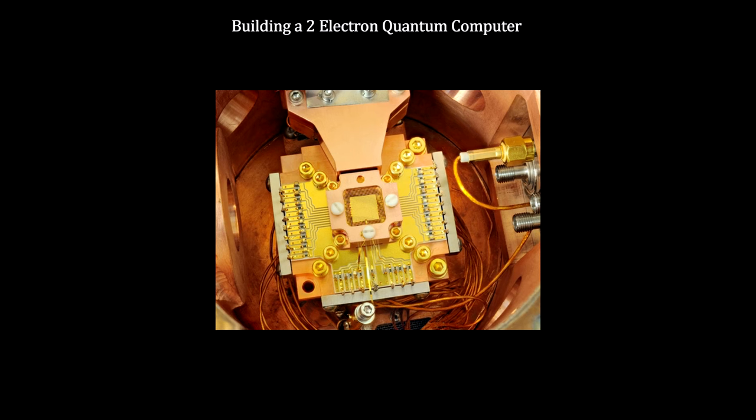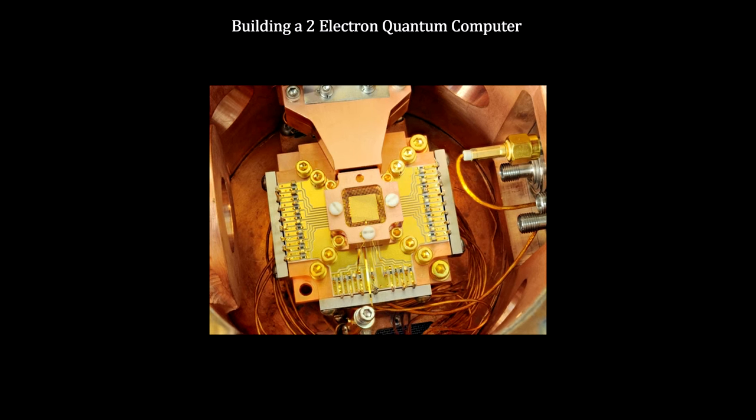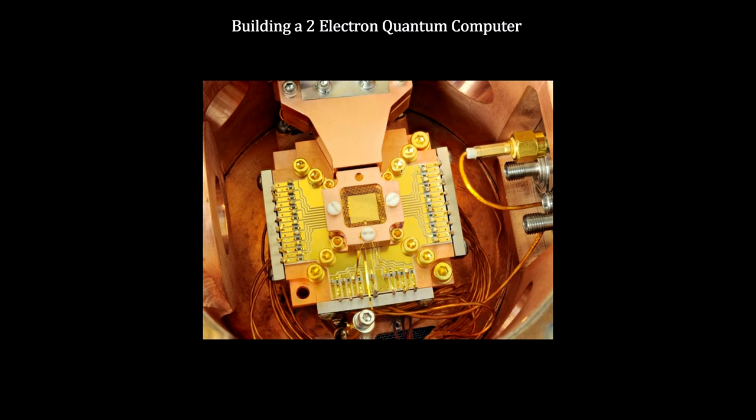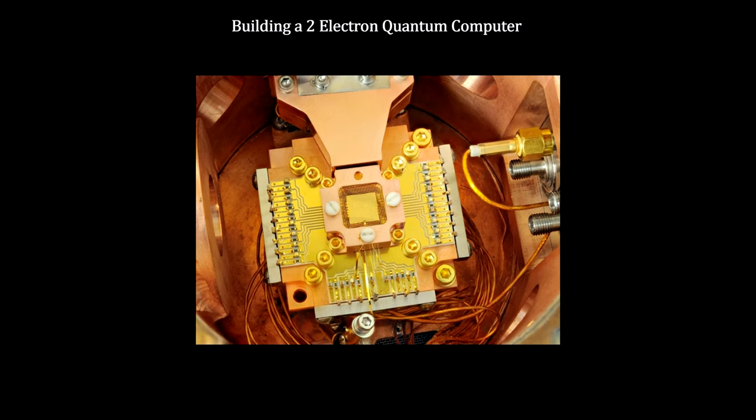To understand how quantum superposition and entanglement are used, we'll construct a quantum computer out of two electron spin qubits.